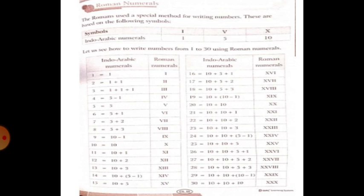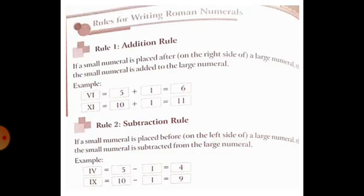Let us see how to write numbers from 1 to 30 using Roman Numerals in Indo-Arabic numerals. So 1 is represented as I, 2 is I plus I, 3 is I plus I plus I, 4 is 5 minus 1, and 5 is V. In Roman Numerals, 1 to 30 are given in the same way — children, kindly go through it and read thoroughly.